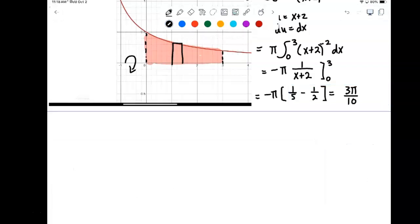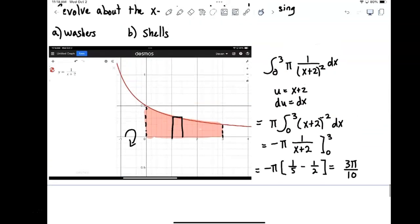So now we've done our volume using washers. Let's turn around now and do the volume here, part B, with shells. Let's turn around and do everything with shells now.